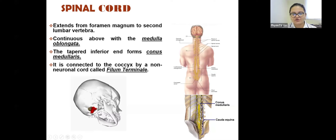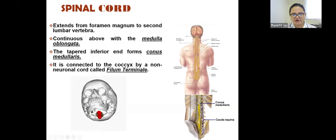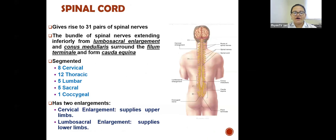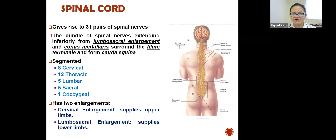From the inferior end, the spinal cord ends at the conus medullaris and extends up to the coccyx in the form of the filum terminale. The bundle of spinal nerves extending inferiorly from the lumbosacral enlargement and conus medullaris surrounds the filum terminale and forms the cauda equina. The bundle of spinal nerves is called the cauda equina, whereas the non-neuronal cord is called the filum terminale.